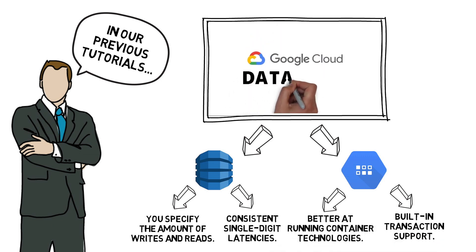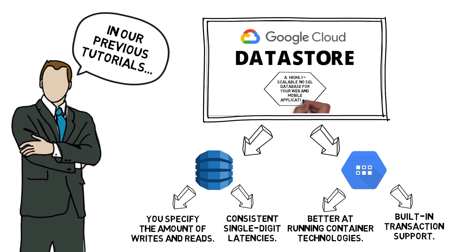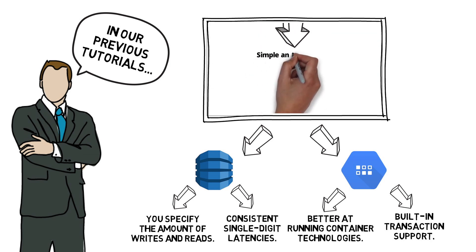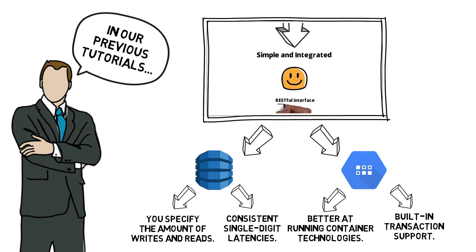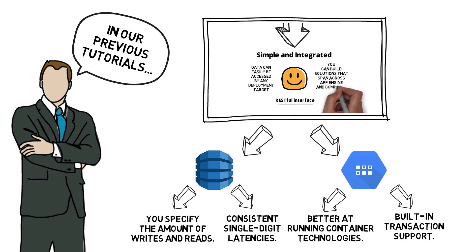Google Cloud offers another service called Datastore. Datastore is a highly scalable NoSQL database for your web and mobile applications, very much like a DynamoDB database on AWS and blob storage for Azure. It's simple and integrated, provides a RESTful interface which data can be easily accessed by any deployment target. You can build solutions that span across App Engine and Compute Engine.